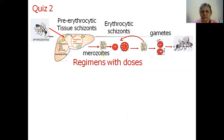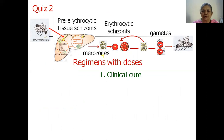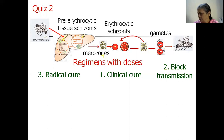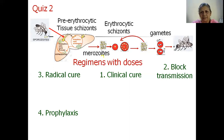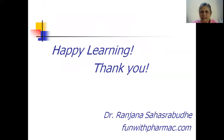That completes the regimens with doses. Before we stop this session, let's emphasize the important points you've studied. Please try to remember and write down the strategies and drug regimens for clinical cure, the drug regimen to block transmission, the drug regimen for radical cure, and the drug regimen to prevent malaria in a traveler going to an endemic area. Wishing you happy learning — thank you.